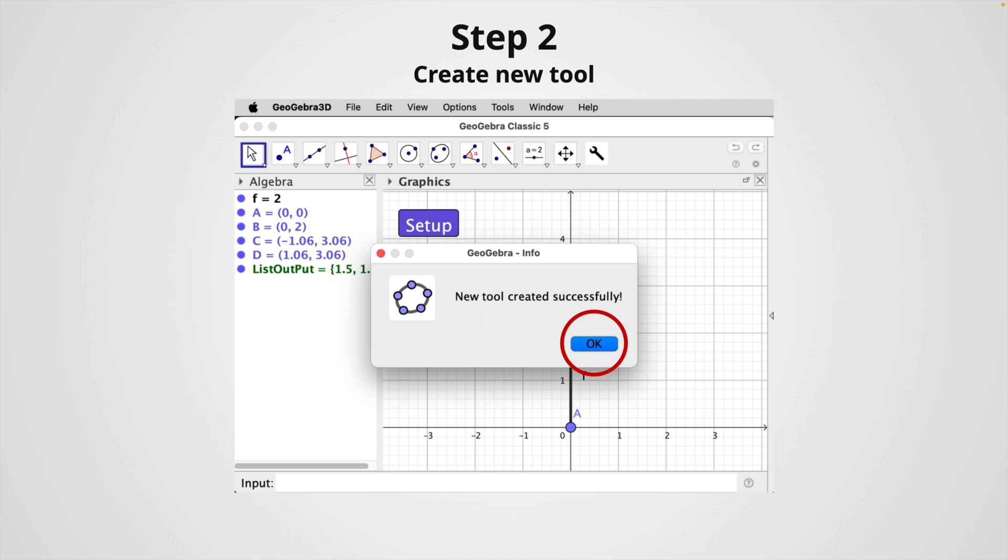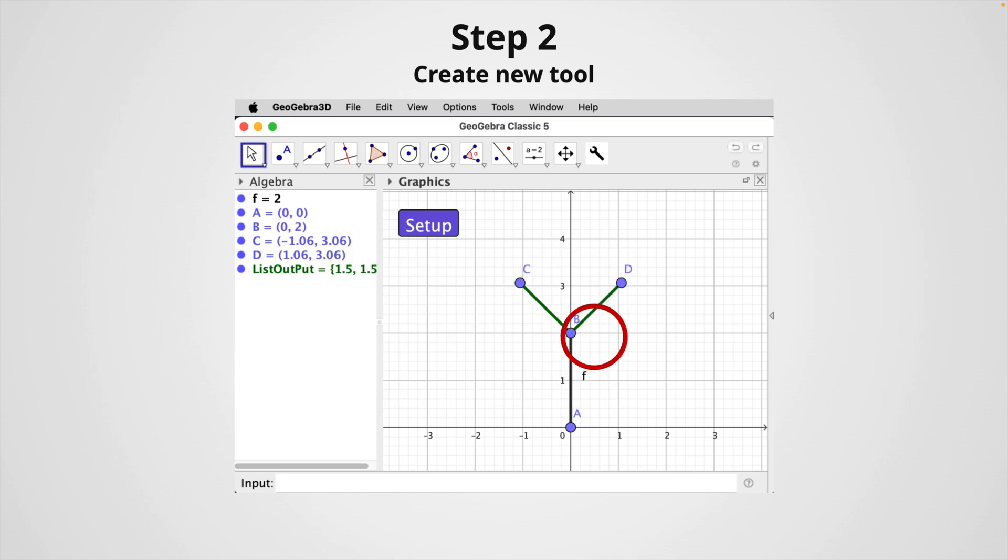And that's it. We can now use our new tool. Notice that we just created a personalized tool and the icon will show up right next to the predefined GeoGebra tools. We can use this new tool by clicking on it and selecting a segment to create its branches, or we can also use it as a command in the input box. This is a very useful method to create personalized tools. So you're not limited by the predefined tools in GeoGebra.